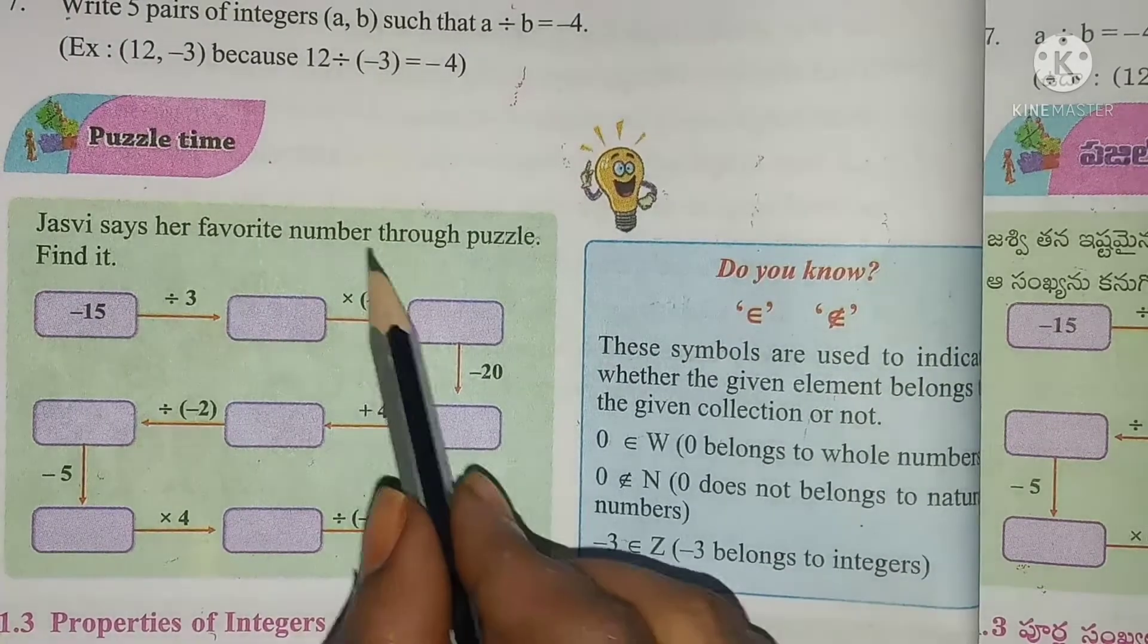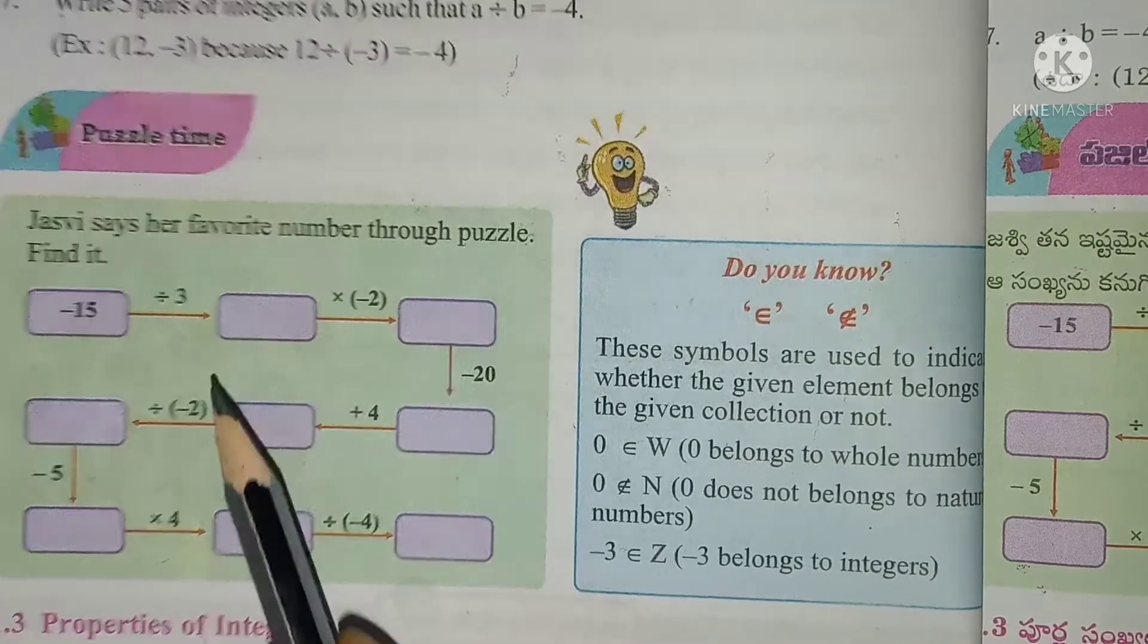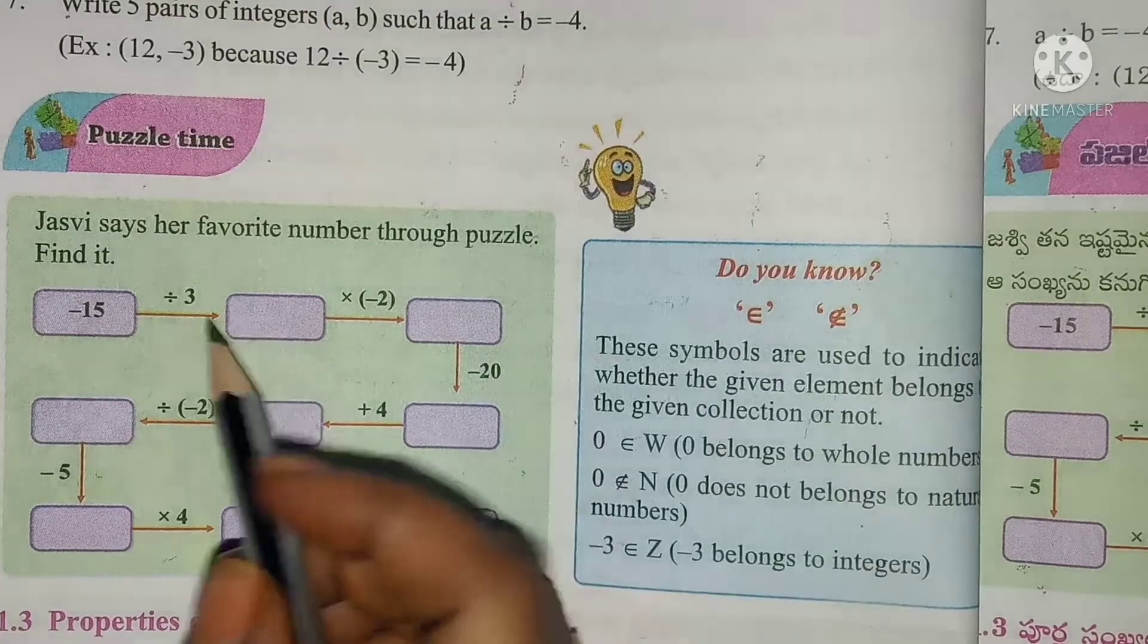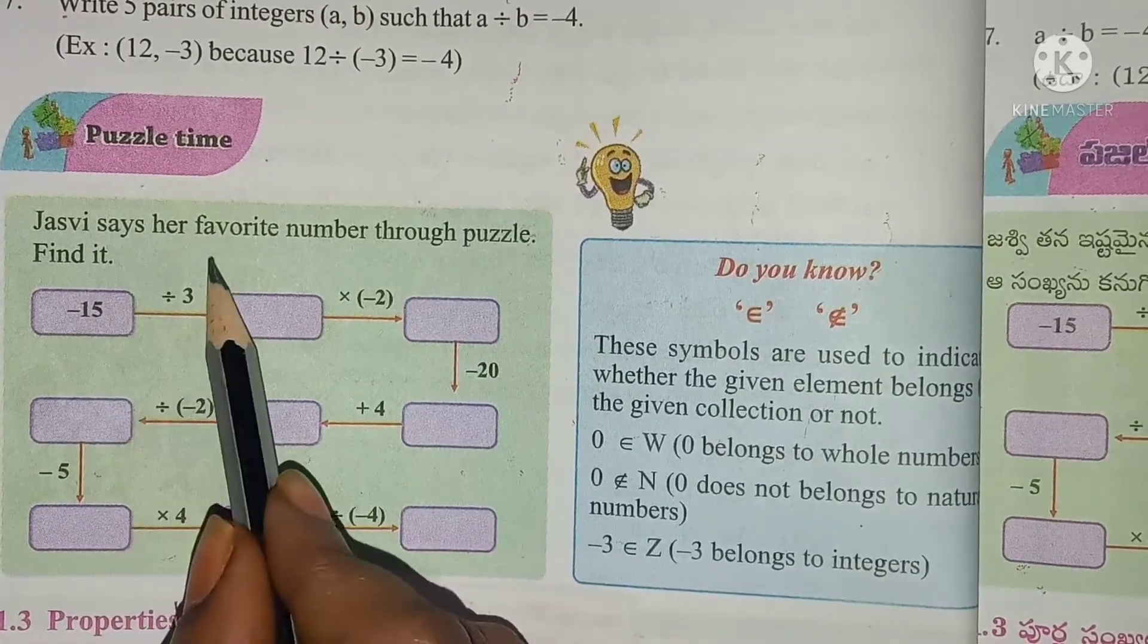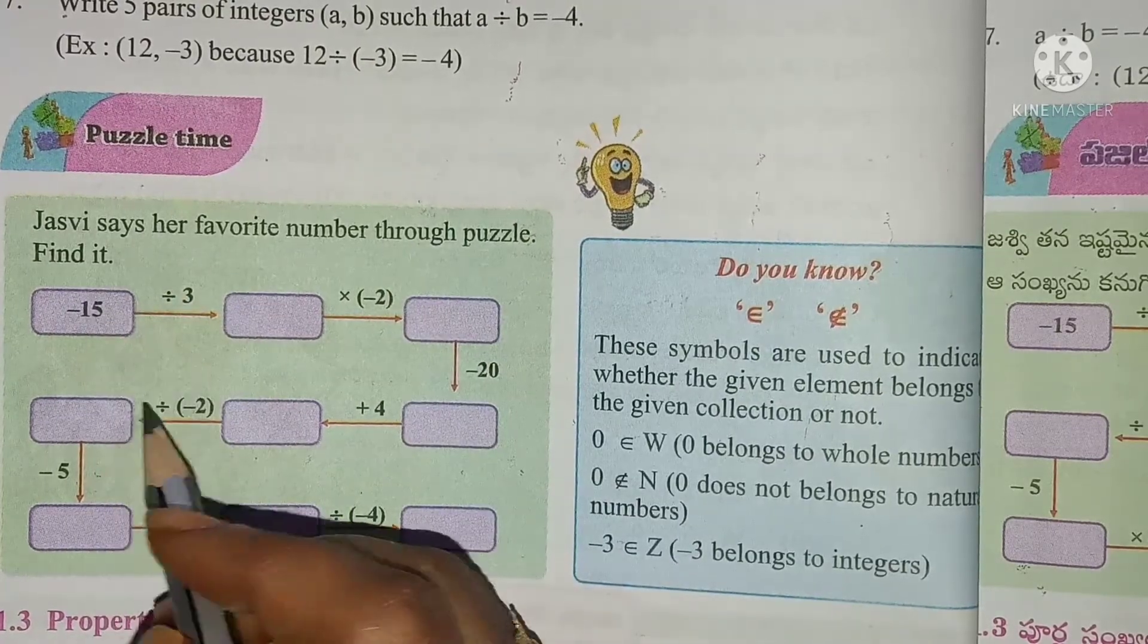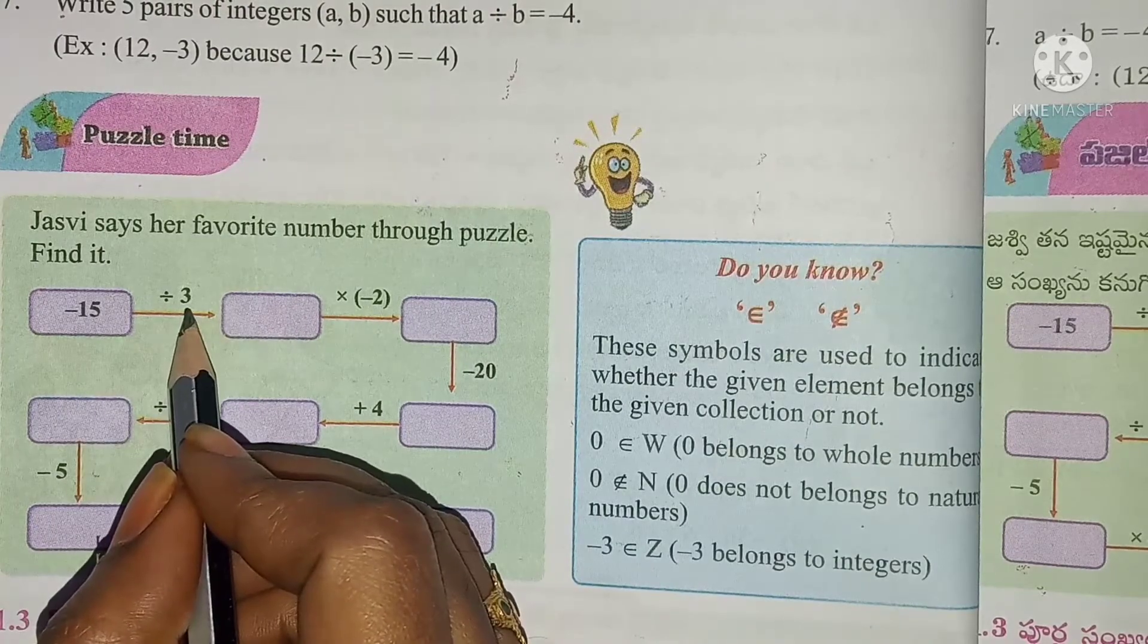So using these mathematical operations, it is a puzzle. Jasvi, a girl, is telling her favorite number through a puzzle and we have to find it out. Minus 15 divided by 3.